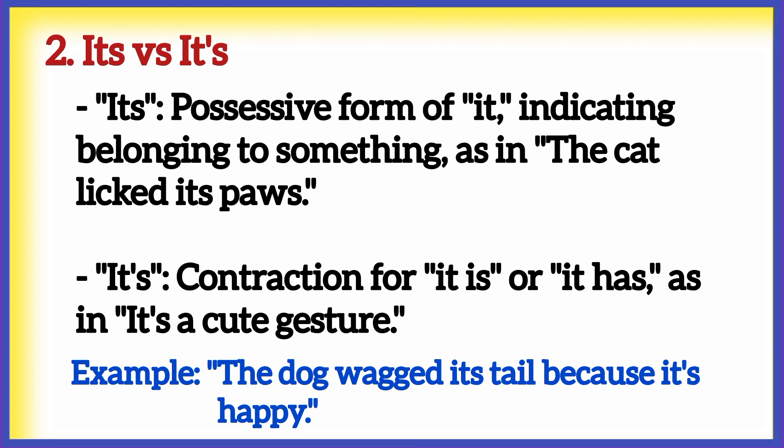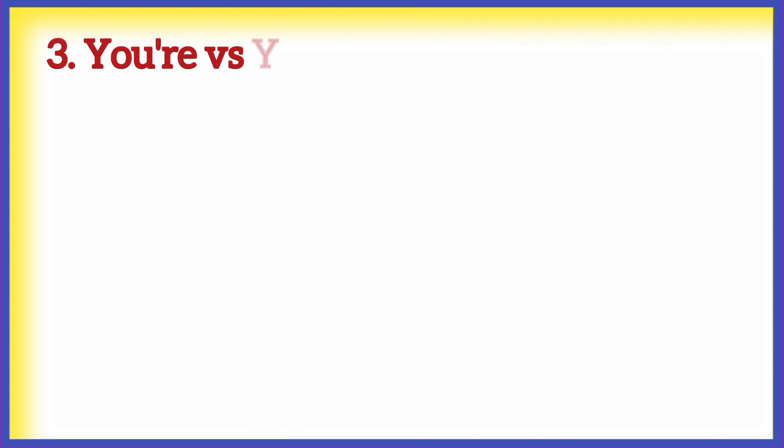Number two: it's versus it's. 'Its' is the possessive form of 'it,' indicating belonging to something, as in 'the cat licked its paws,' while 'it's' is a contraction for 'it is' or 'it has,' as in 'it's a cute gesture.' Example: 'The dog wagged its tail because it's happy.'